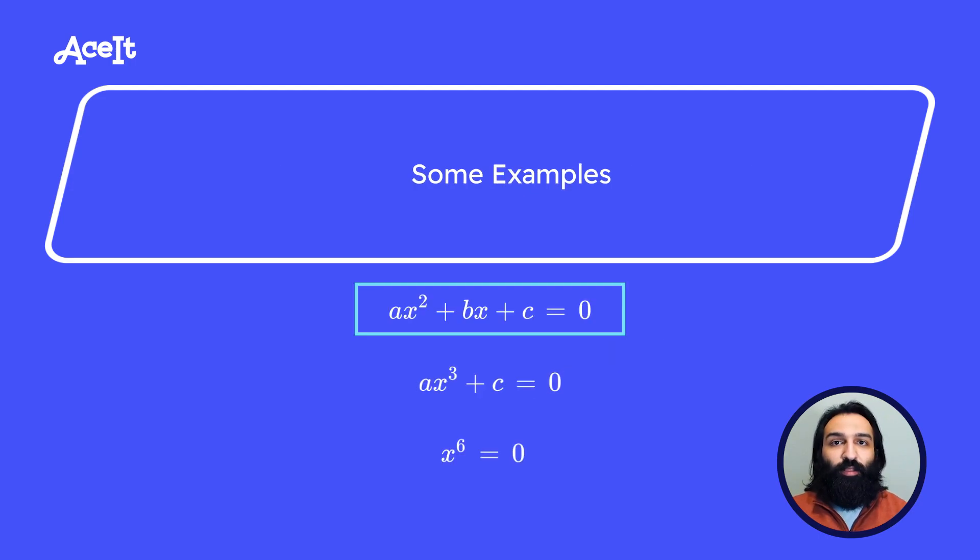Here are some examples. The first equation we see here is an example of a quadratic equation. Quadratic equations are a second degree polynomial. This means that their leading term is raised to power of two. Since their leading term is raised to power of two, they're automatically considered non-linear equations.